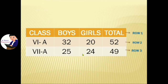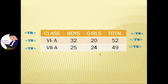Suppose we want to show a table in our web page. This is the first row, this is the second row, and this is the third row. For each and every row we have to start with the tr tag and close with the closing tr tag.